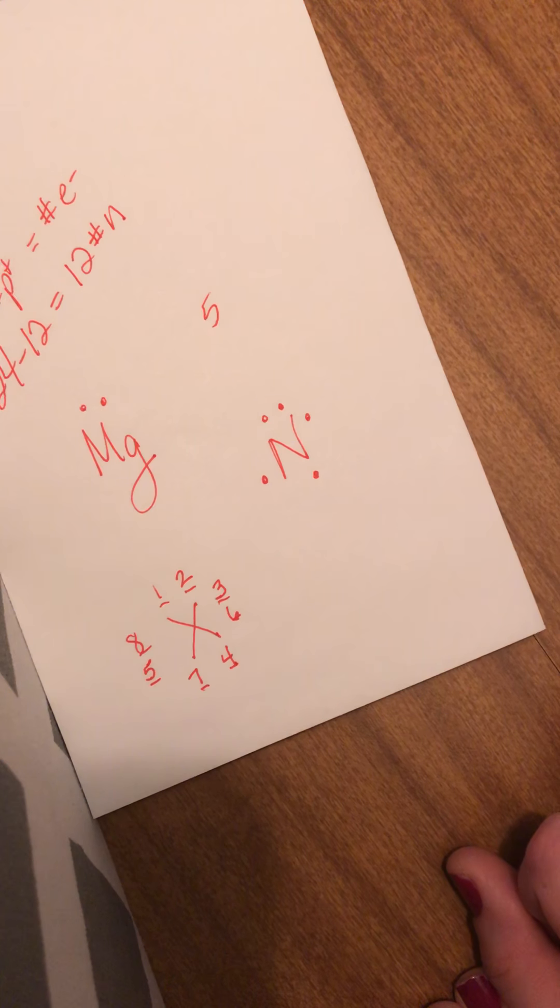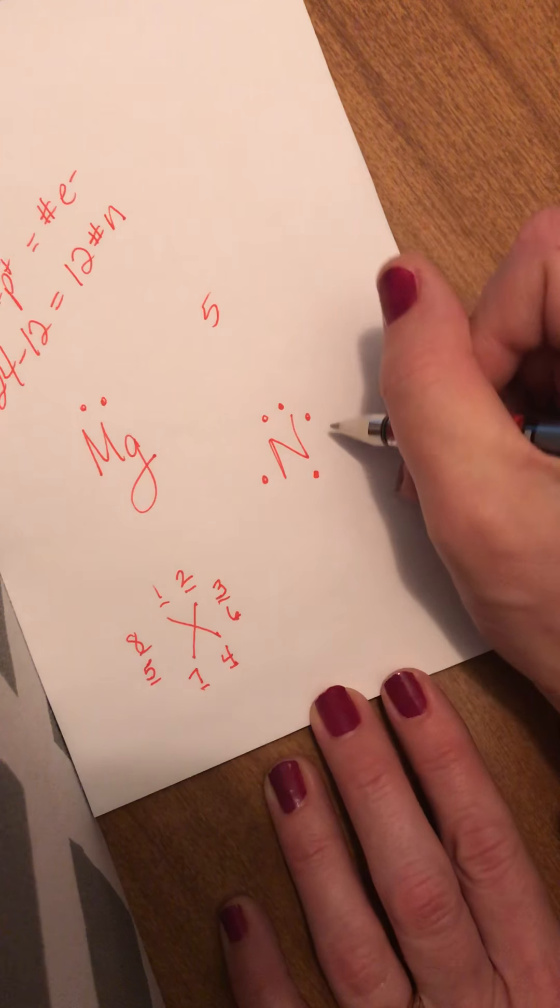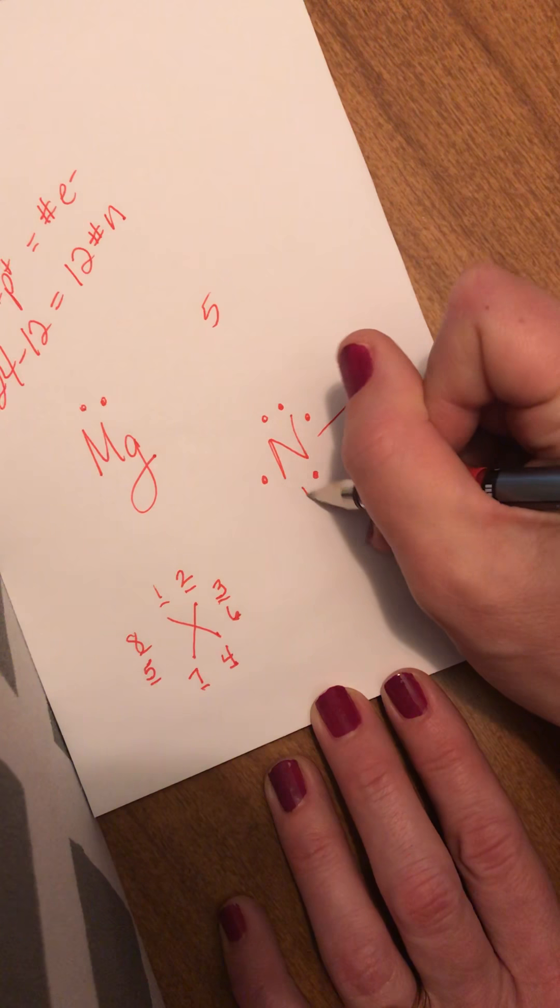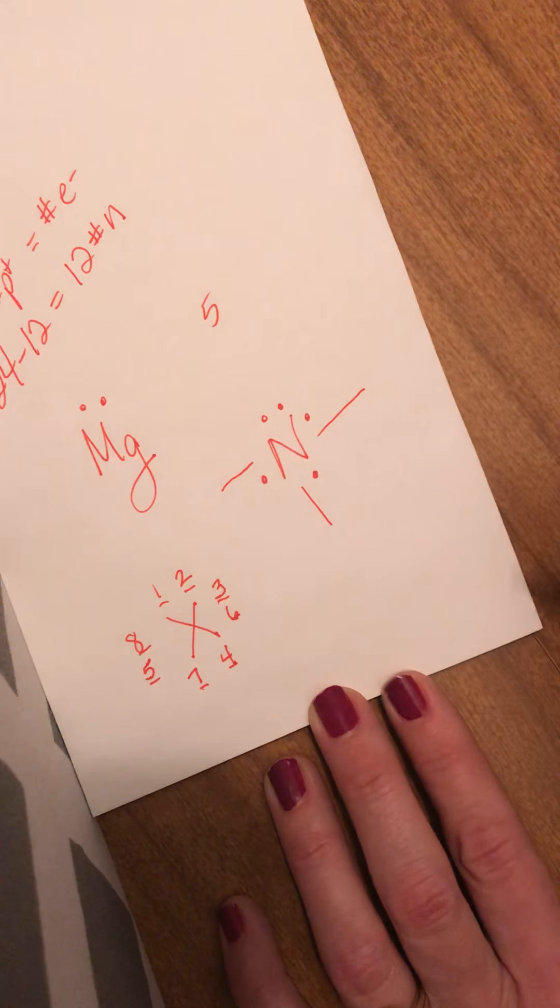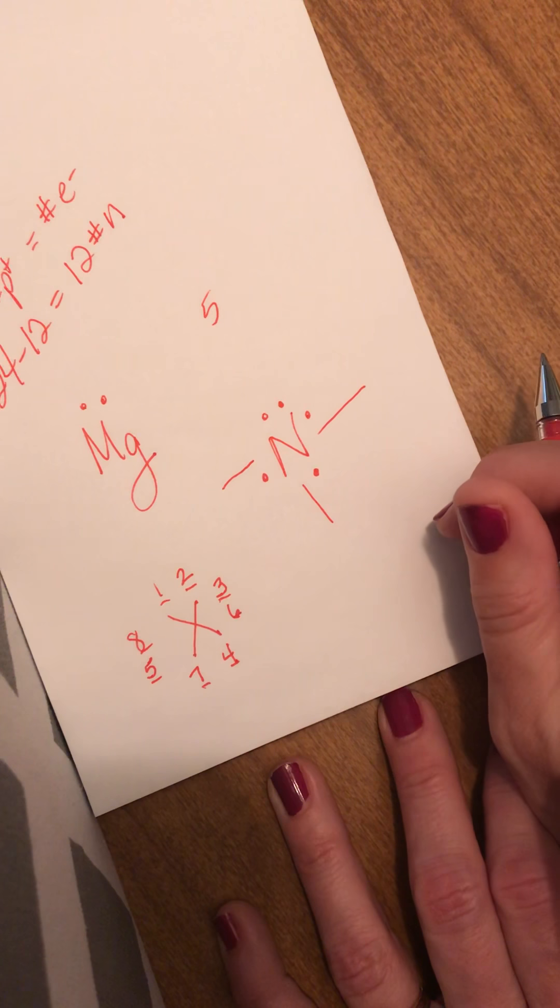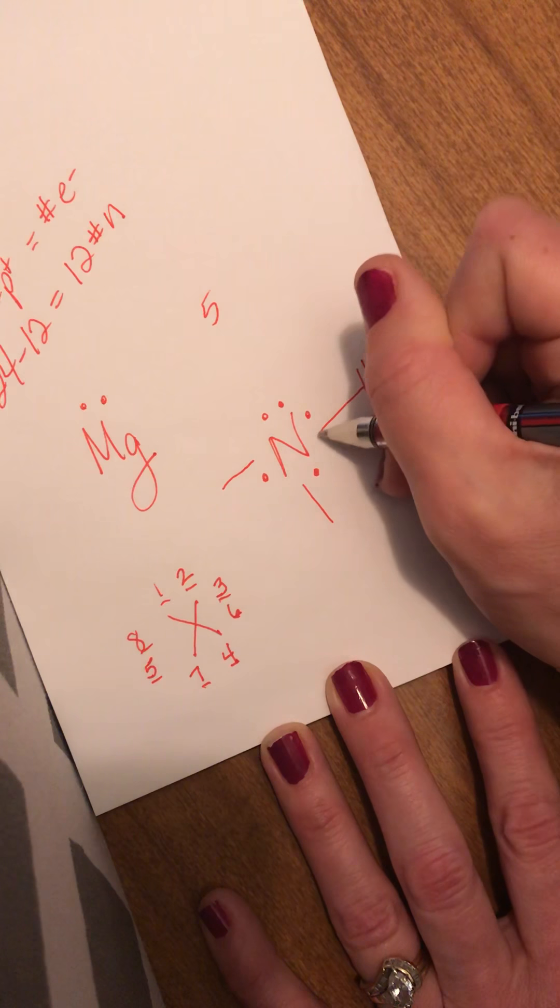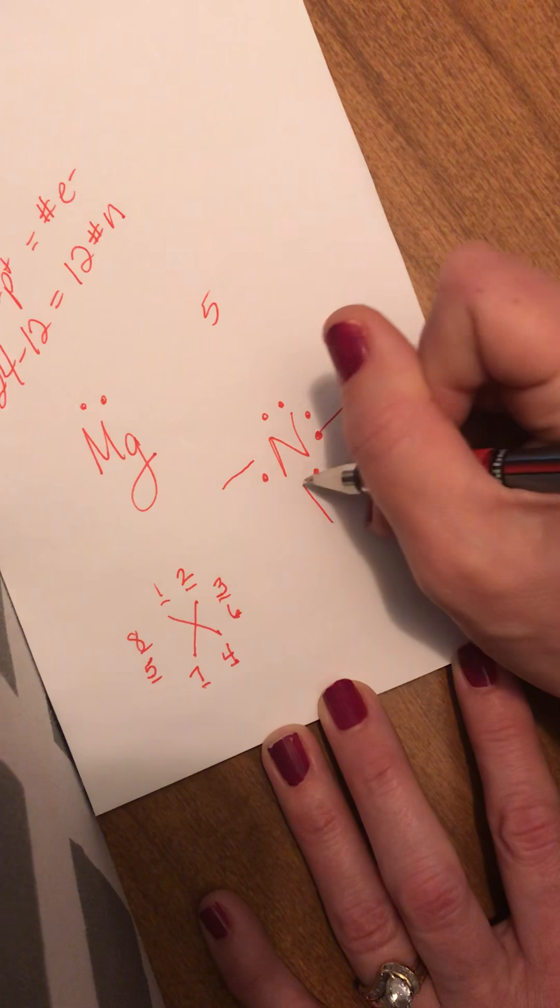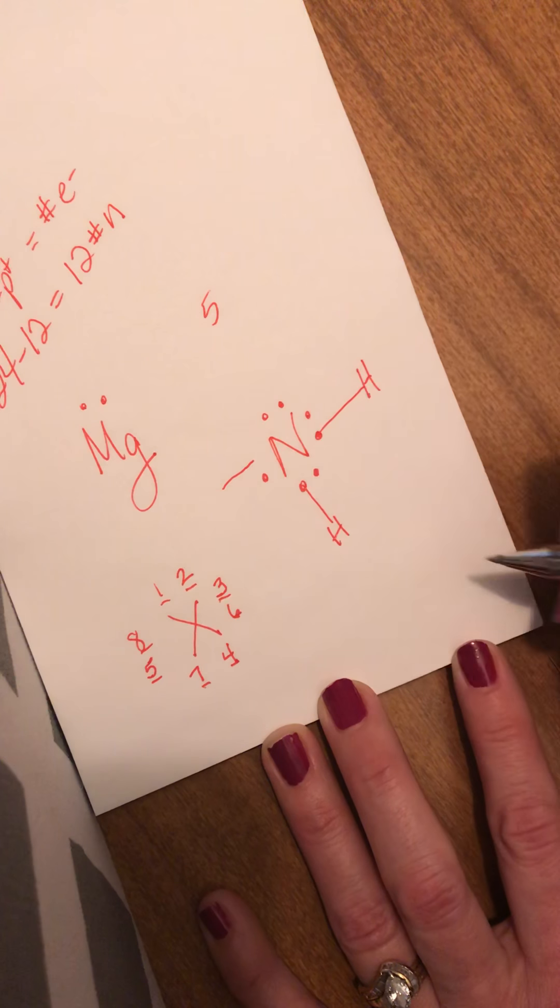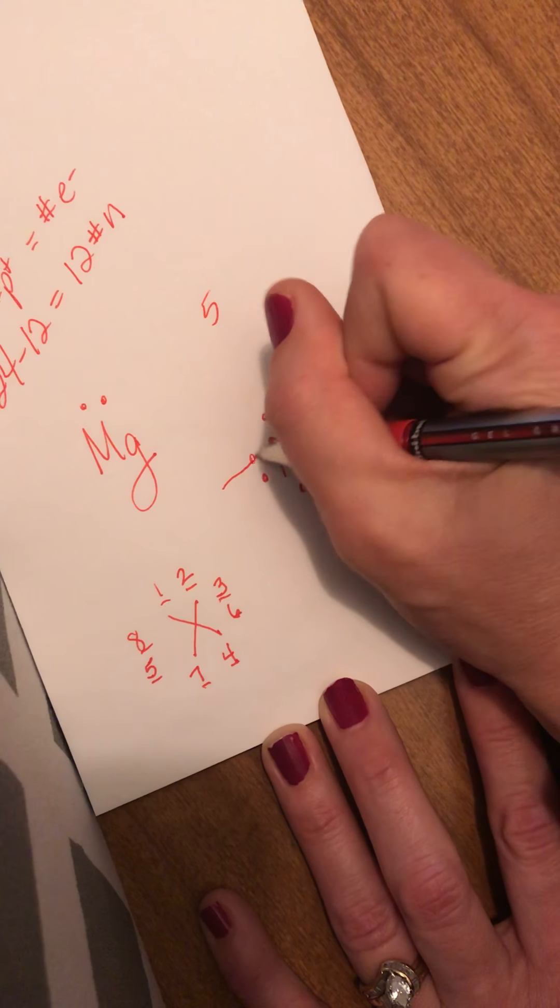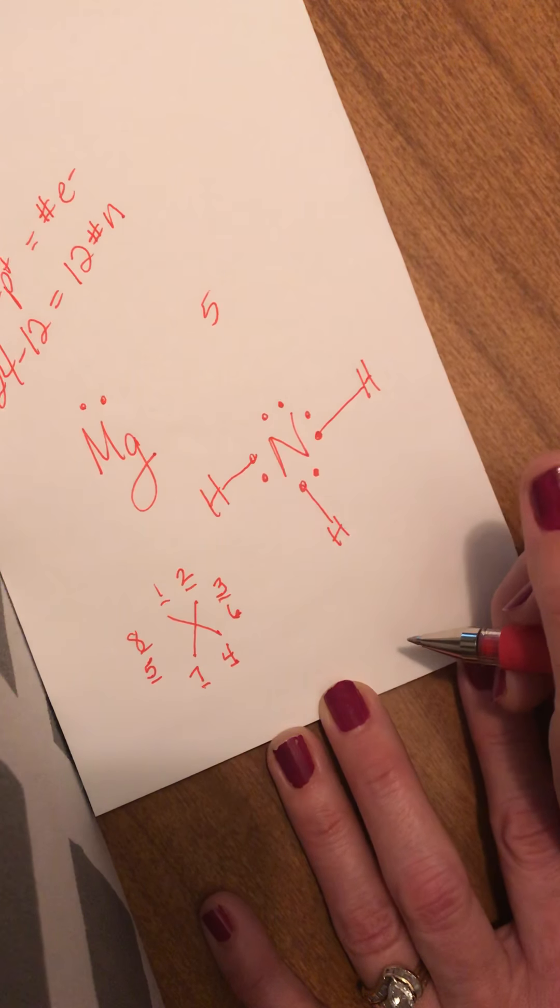But what it also tells me is quite a bit more information about it. I know there are 3 open spots. 1, 2, 3. And nitrogen very often forms 3 bonds. So I could have a hydrogen here sharing 1 electron, a hydrogen here sharing 1 electron, and a hydrogen here sharing 1 electron.